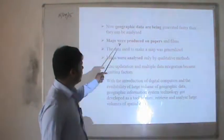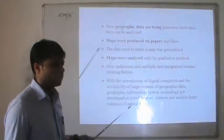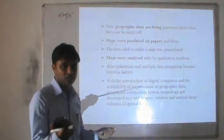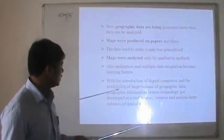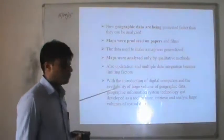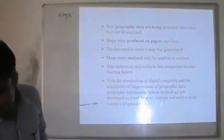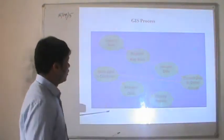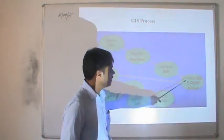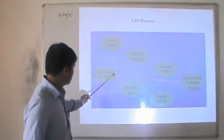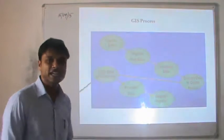Maps were originally produced on papers and films, but now we can produce and rectify maps on digital devices using available technology. The GIS process includes: capturing data, registering the map base, interpreting data, converting data to digital format, storing data in a computer, processing the data, and then displaying the result.